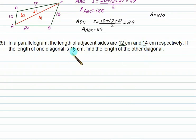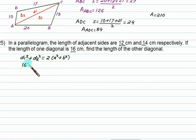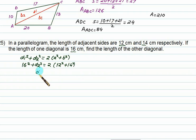Problem: In a parallelogram, adjacent sides are 12 and 14, and one diagonal is 16. Find the other diagonal. Using the property: d1² + d2² = 2(a² + b²), we get 16² + d2² = 2(12² + 14²). Solving gives d2 ≈ 20.6 cm.